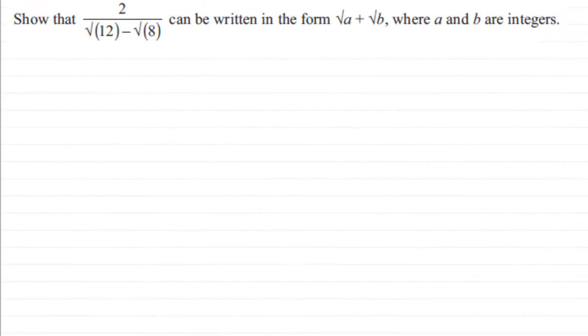Hi. What we have here is a question on simplifying surds. We've got a fraction. We've got to show that 2 divided by the root of 12 minus the root of 8 can be written in the form √a + √b, where a and b are integers.